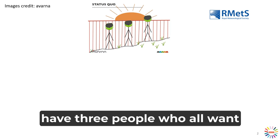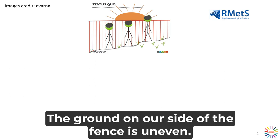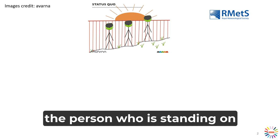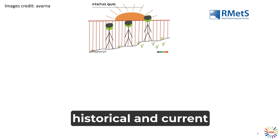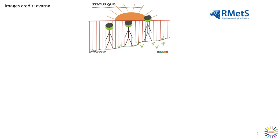Imagine a situation where we have three people who all want to see over a solid fence to see the sunrise or the sunset beyond. The ground on our side of the fence is uneven, so at the moment the person who is standing on the highest ground is the only one who can see over the fence. We can think of that as the status quo. The different levels of ground reflect different historical and current disadvantages or advantages faced by different groups of people.